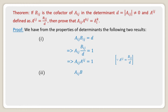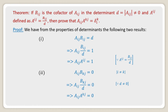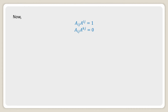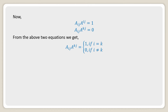From the second property of determinants: Aij into Bkj equals 0 where i is not equal to k. Dividing both sides by D, since D is not equal to 0, and substituting A upper kj for Bkj over D, we get Aij into A upper kj equals 0. Therefore, combining both results: Aij into A upper kj equals 1 if i equals k, and 0 if i is not equal to k. That is, Aij into A upper kj can be written in terms of Kronecker delta Ki.